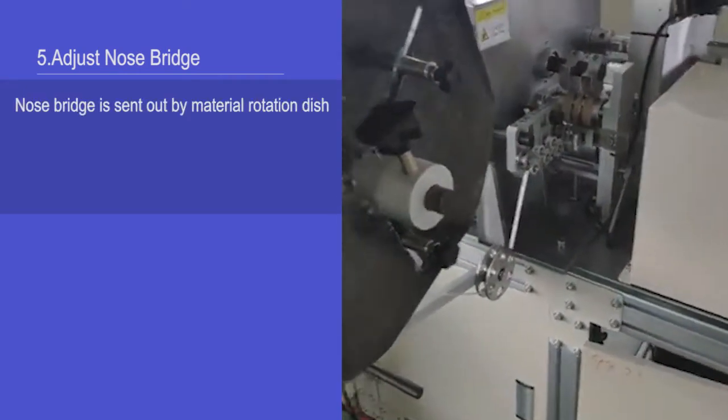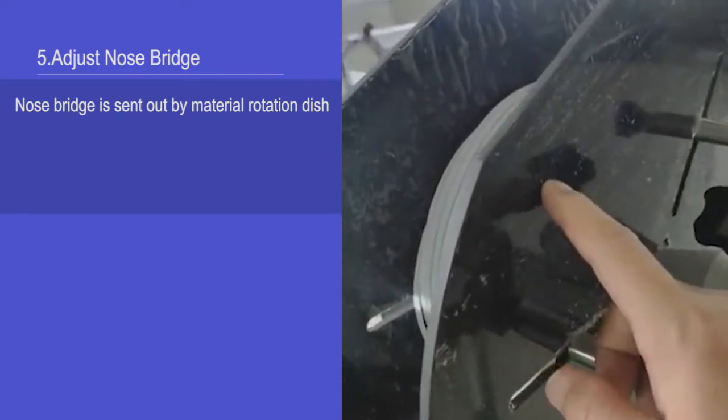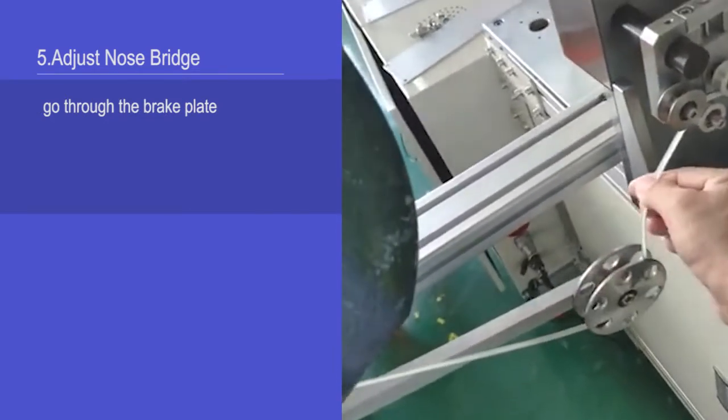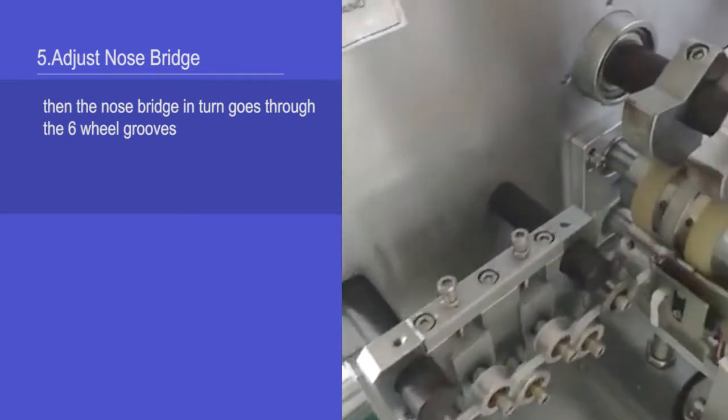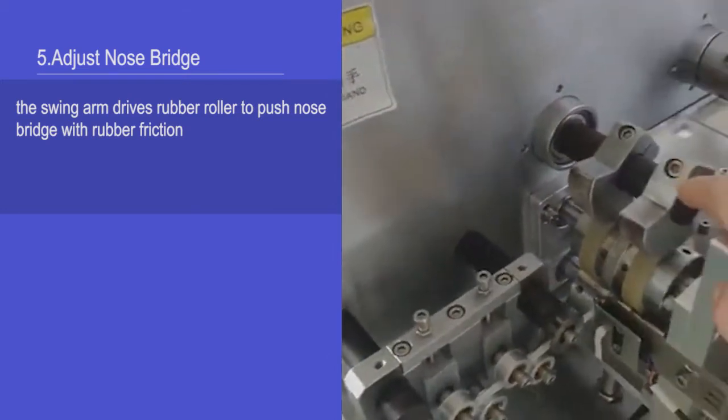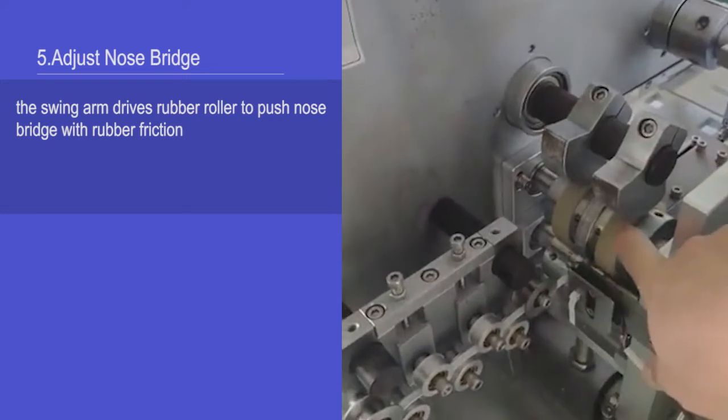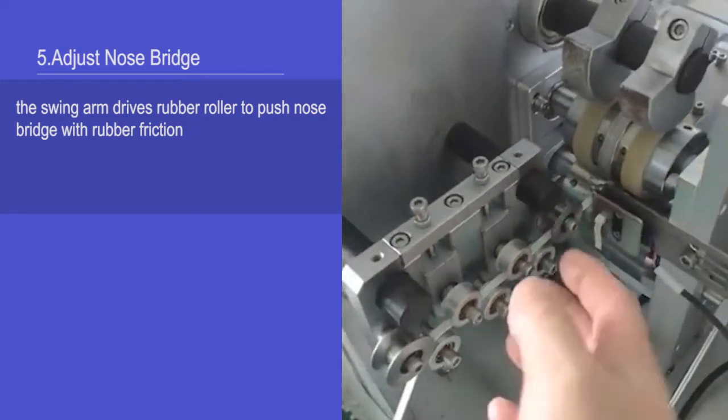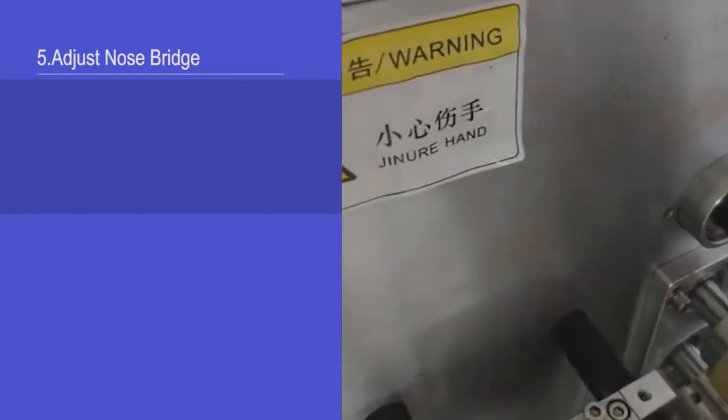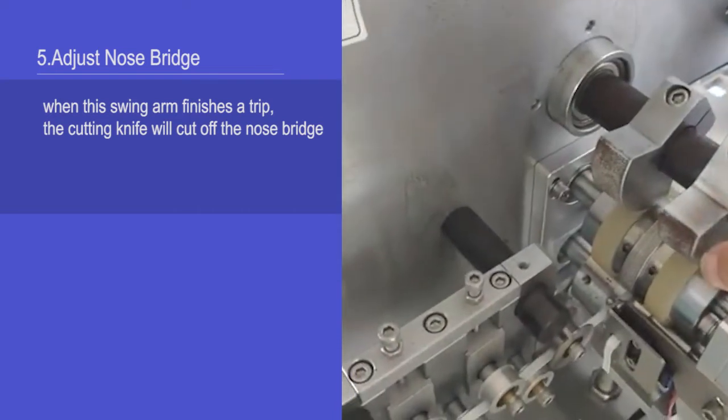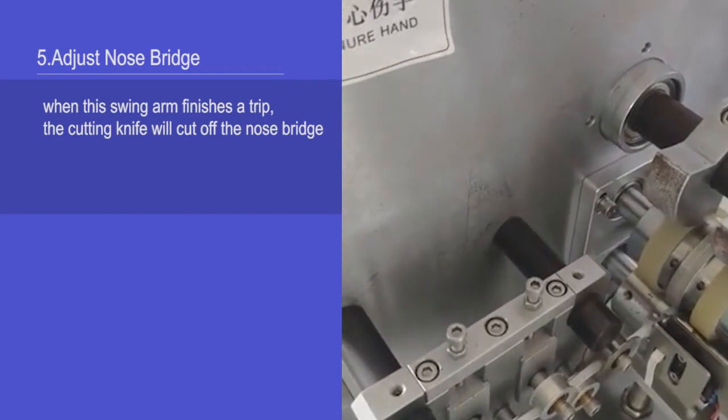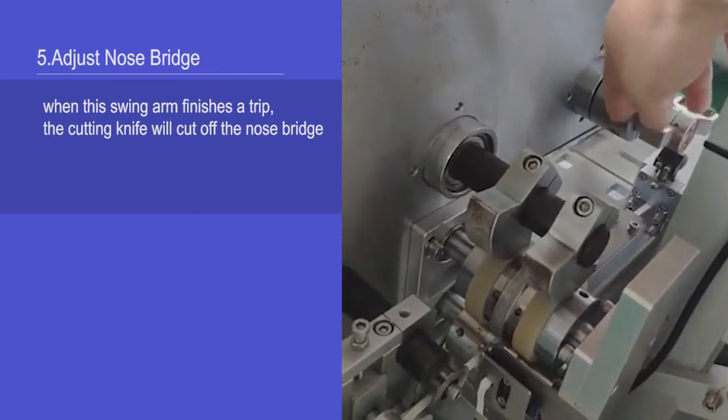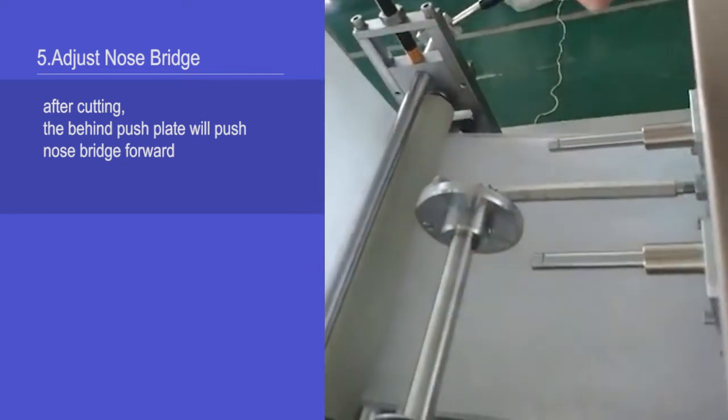Adjust nose bridge. Nose bridge is sent out by material rotation dish, go through the brick plate, then the nose bridge in turn goes through the six wheel grooves. The swing arm drives rubber ruler to push nose bridge with rubber friction. When this swing arm finishes its trip, the cutting knife will cut over the nose bridge.